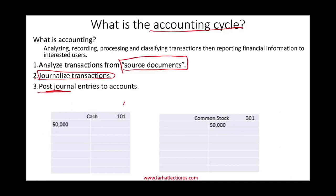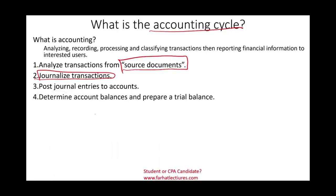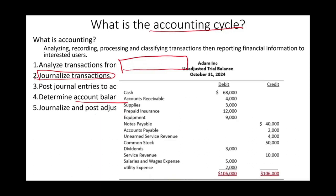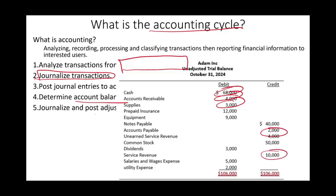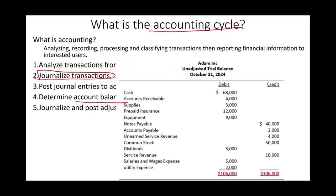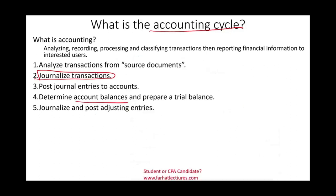A computerized system captures all of this and does it simultaneously. After processing all transactions, we determine the account balances and prepare a trial balance. The trial balance lists all accounts — cash, accounts receivable, supplies, accounts payable, service revenue, and so forth — with their debit or credit balances, and they should balance.